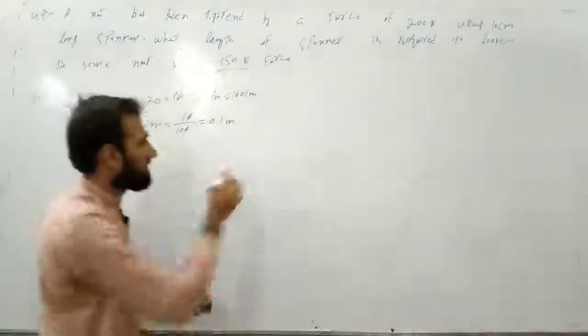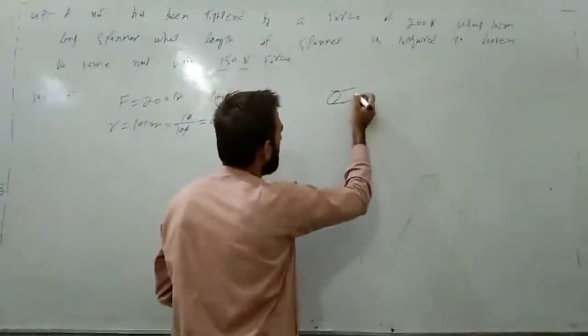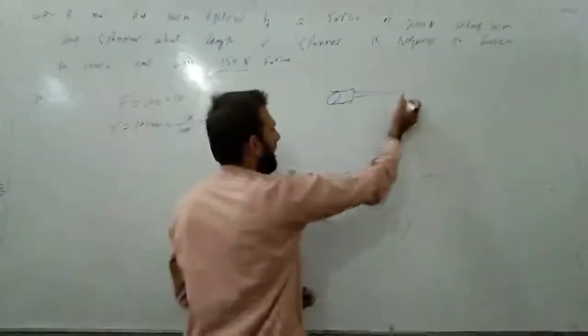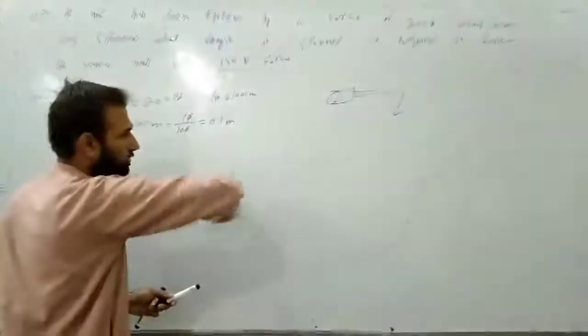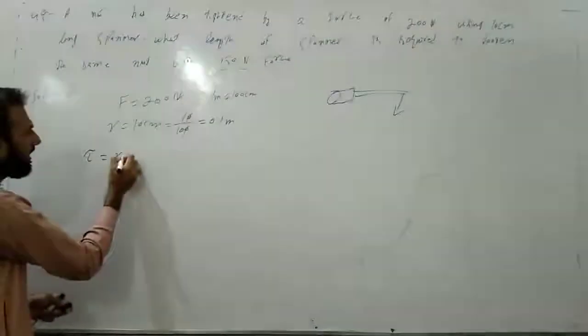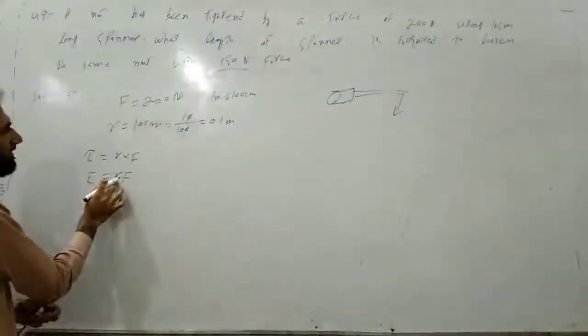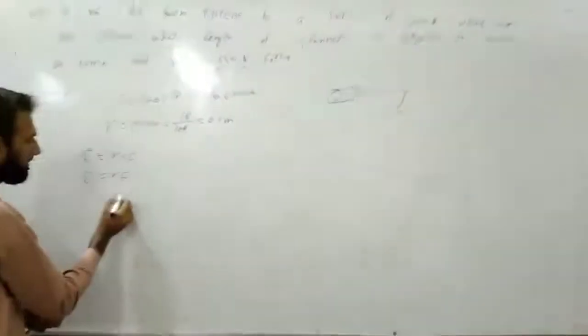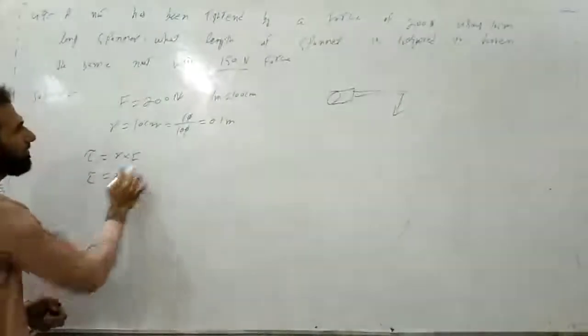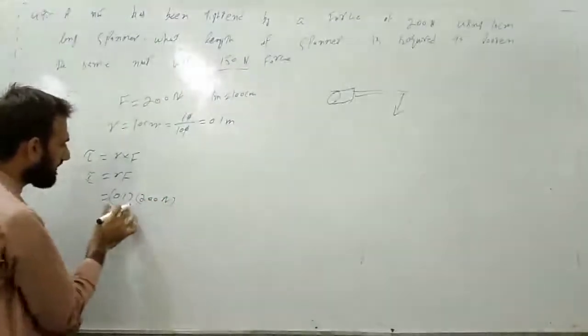When the spanner is placed on the nut and rotated, torque is produced. Torque tau is equal to r cross F, which is r times F. So R is 0.1, multiplied by F force of 200 Newton.